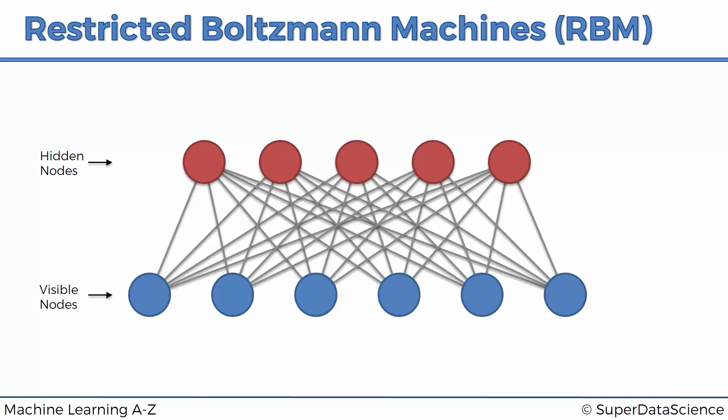We're going to look at an example with movies, because you can use a restricted Boltzmann machine to build a recommender system — that's exactly what you'll be doing in the practical tutorials. This will help build an intuitive understanding of the RBM. Our recommender system is going to work on six movies; of course in reality there will be many more, but we'll use six for simplicity.